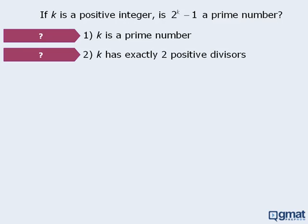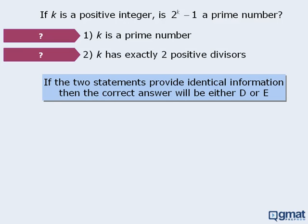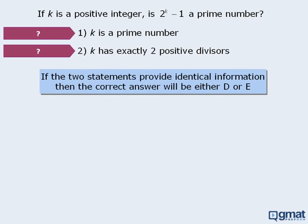Well, if a number has exactly two positive divisors, then that number must be prime. We have a nice rule for this situation: if two statements provide the same information, then the correct answer must be either D or E. This should make sense to us — if both statements provide the same information, then the correct answer cannot be A, B, or C. So for this question, we should guess either D or E.